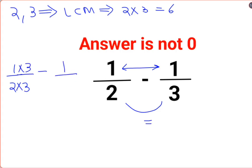Similarly, over here for 1 upon 3, this 3 needs to get converted into 6. So I will multiply by 2. Here also I will multiply by 2.